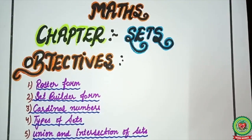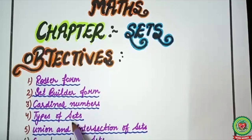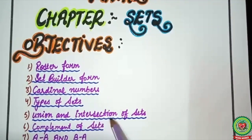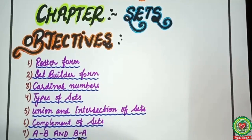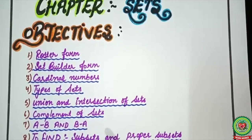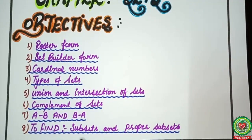Dear students, in this chapter Sets, we have already done Roaster Form, Set Builder Form, Cardinal Numbers, Types of Sets, Union and Intersection of Sets, Complement of Set, and A-B and B-A. So today's video is going to be about some applications for how to find all possible subsets and the proper subsets with the given set. So let's get started.